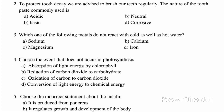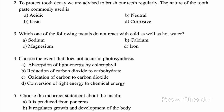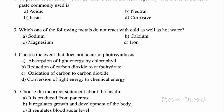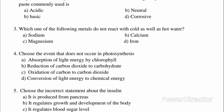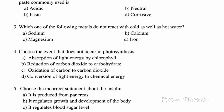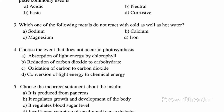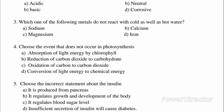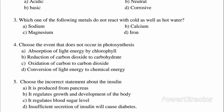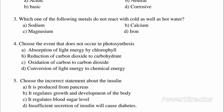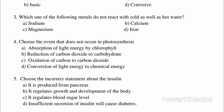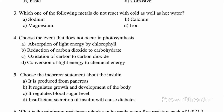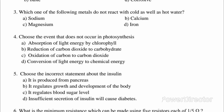Question 5: Choose the incorrect statement about insulin. A. It is produced from pancreas. B. It regulates growth and development of the body. C. It regulates blood sugar level. D. Insufficient secretion of insulin will cause diabetes. Answer: B. It regulates growth and development of the body.